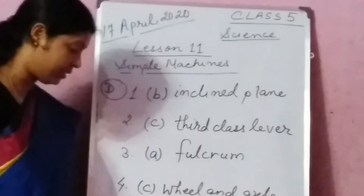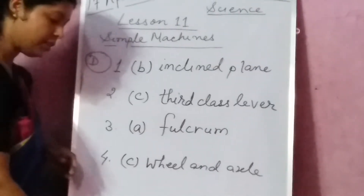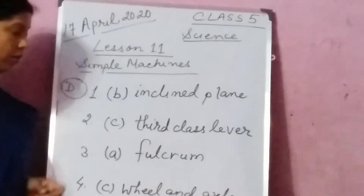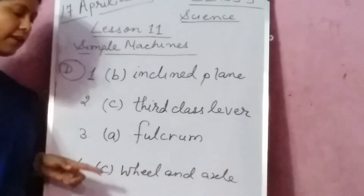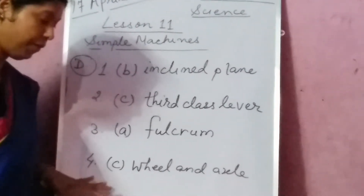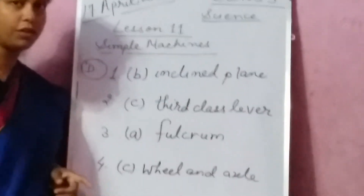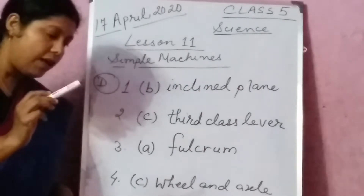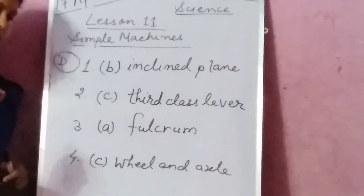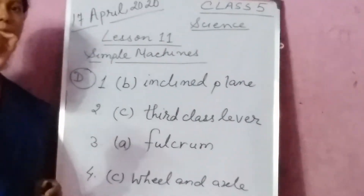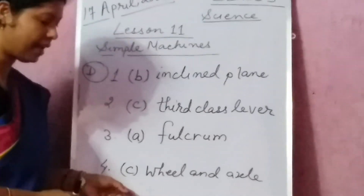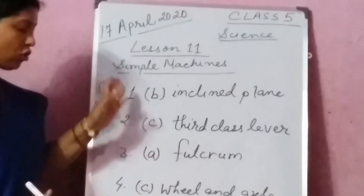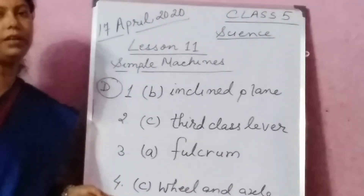Now we are going to do exercise D, that is tick the correct answer. Number 1: which of these simple machines helps to move heavy objects to a height? It is the inclined plane. Number 2: tongs are an example of third class lever. Number 3: a lever is a rigid bar or rod that rests on a support called fulcrum. Number 4: which of these is a modified lever of the first class? The answer is wheel and axle, because it rotates in a circle around the center point or fulcrum — and in first class lever, the fulcrum is in the center. Children, please copy exercise A, B, C, D in your science copies and revise. Thank you.